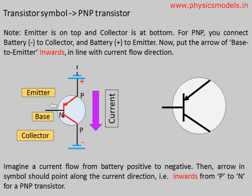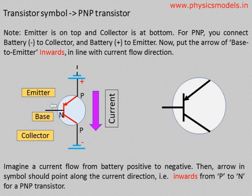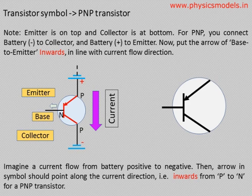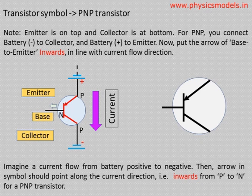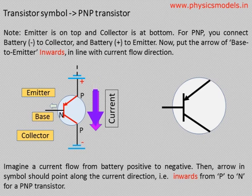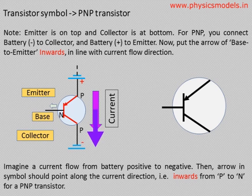Now we look at a PNP transistor. In a PNP, one terminal is P, and to fix the emitter we connect it to the positive of a battery — positive starts with P, and P is P, so when you have two P's that's the emitter. Once the emitter is fixed, the other end of the transistor has to be the collector and you connect that P terminal to the negative of a battery. Once you do that, the direction of the current from the positive of the battery towards the negative is established — the violet arrow. Therefore inside the transistor circle, the arrow from P to the base is pointing inwards, and you can see that the direction of the arrow indicates the general direction of current flow through the transistor, as shown in the small animation.